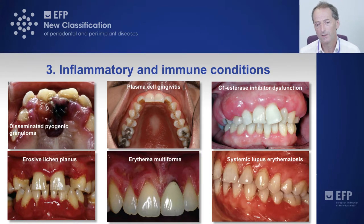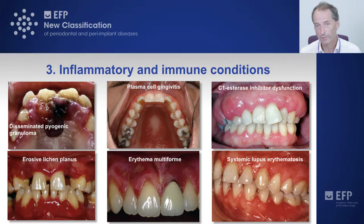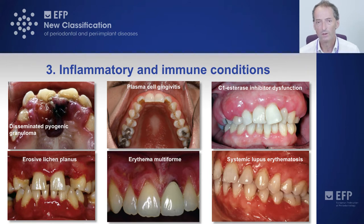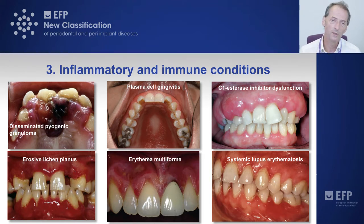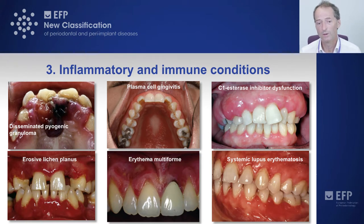On the top right image is a C1 esterase inhibitor dysfunction. This patient is deficient in an inhibitor of C1 esterase, the enzyme that activates complement C1 and triggers inflammation. If you're deficient in the inhibitor, you produce too much inflammation and can't switch it off. This results in very oedematous, enlarged gingival tissue due to an overreaction to accumulated plaque. Over a 30-year period, this led to destruction of alveolar bone and eventually total tooth loss — not because of plaque directly, but because of the exaggerated inflammatory response.